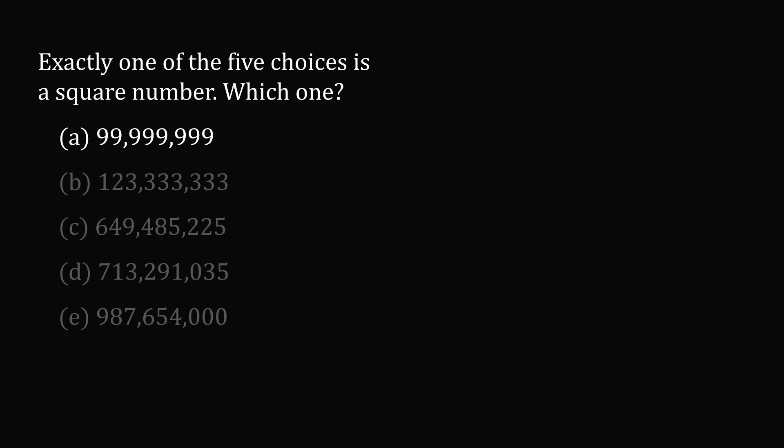So let's look through each of the options. Let's start with the first number. Answer choice A is 1 less than 100 million. 100 million has 8 zeros, so it is equal to 10 to the power of 8. But 10 to the power of 8 is a perfect square because this is the square of 10 to the power of 4.